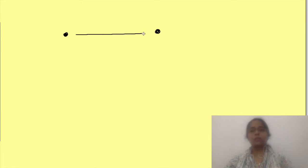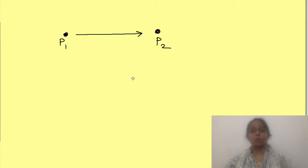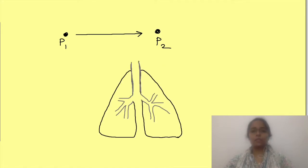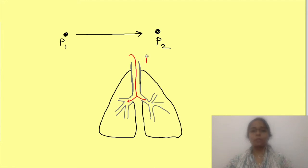Fundamentally, for any liquid or gas to move from one place to another there should be some pressure difference between the two sides. So during inspiration, for the air to move from the atmosphere into the lungs, atmospheric pressure should be higher than the pressure inside the lungs, and during expiration it should be the opposite.